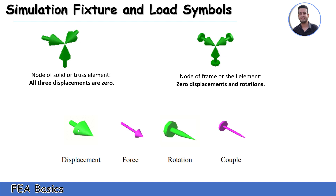For the symbol of displacement, we have a big green arrow. For force, we have a small pink arrow. For rotational, we have a pin arrow. For coupling, we have a pink pin.